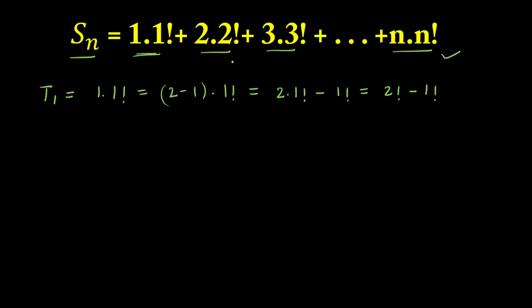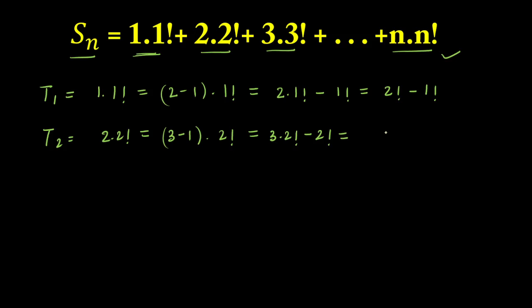For the second term t₂: 2·2! can be written as (3 − 1)·2!. Multiplying inside gives 3·2! − 2!, and since 3·2! = 3!, this becomes 3! − 2!.